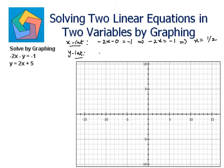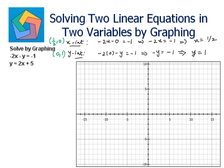For the y-intercept, put x as 0: negative 2 times 0 minus y equals negative 1, so negative y equals negative 1, which gives y equals 1. So (1/2, 0) is the x-intercept and (0, 1) is the y-intercept. Plotting (1/2, 0) and (0, 1) and joining both points gives the graph of the line negative 2x minus y is equal to negative 1.